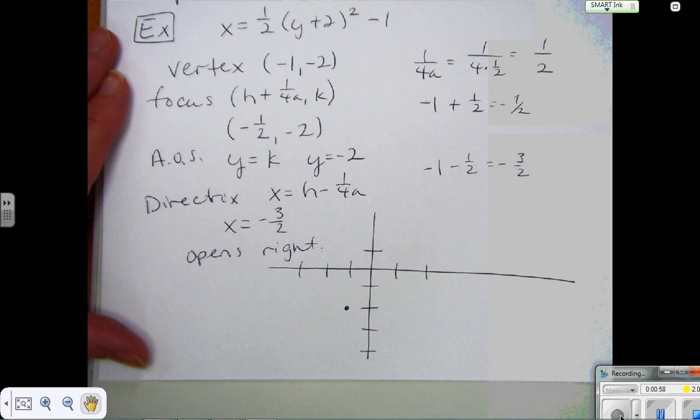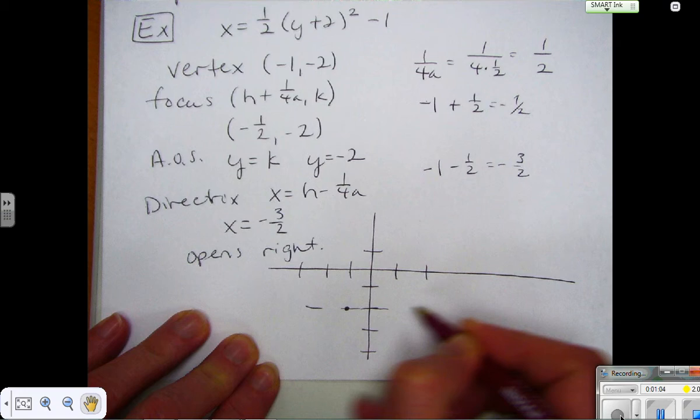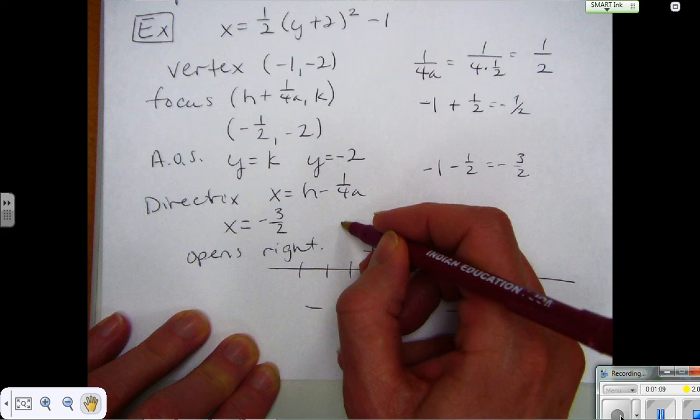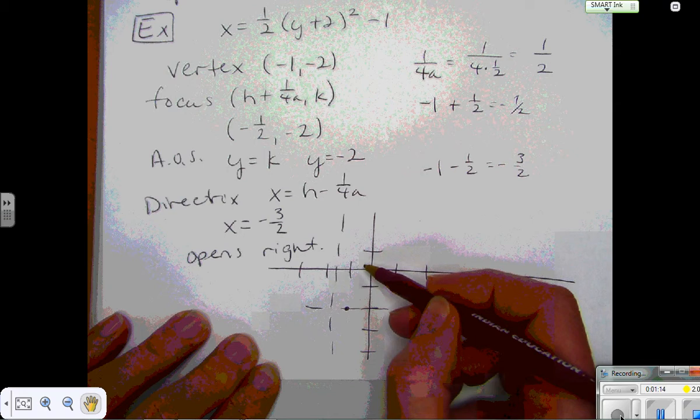So your axis of symmetry is y equals negative 2. The directrix is x equals negative 3 over 2, negative 1 and a half. And then your focus point is at negative 1 half and 2, so it's going to be right there.